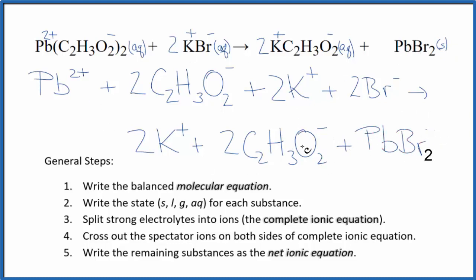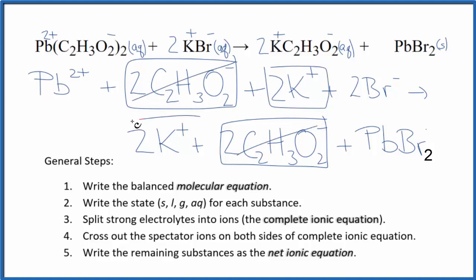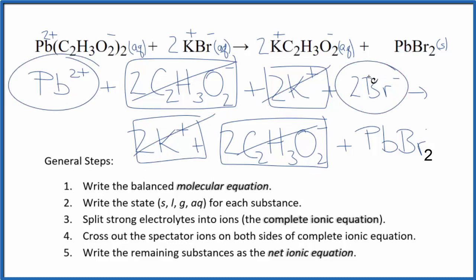This is our complete ionic equation. Now we can cross out spectator ions — things that are the same on both sides. In the reactants I have two acetate ions, and in the products I also have two acetate ions, so we cross those out. Two potassium ions on the reactants side and two potassium ions on the products side — cross those out as well. What's left is going to be the net ionic equation for lead 2 acetate plus potassium bromide.